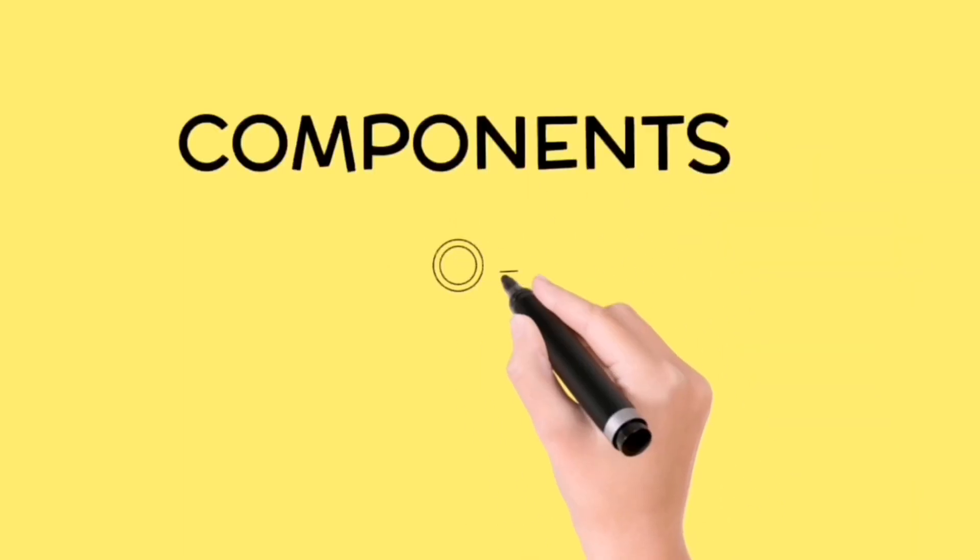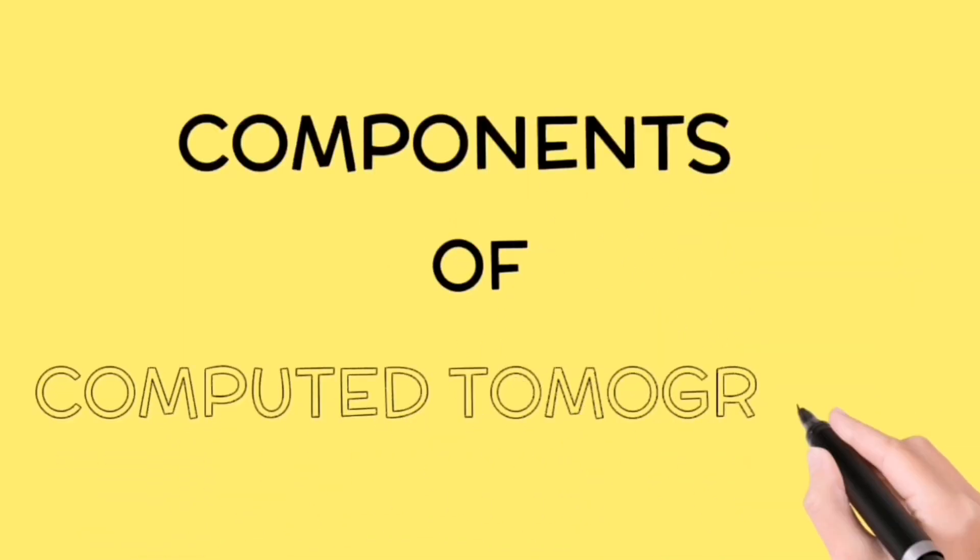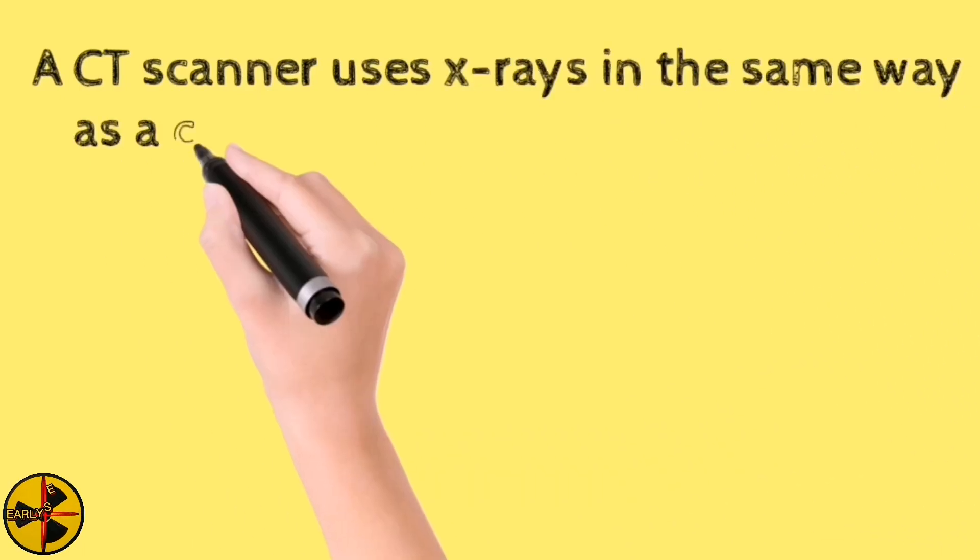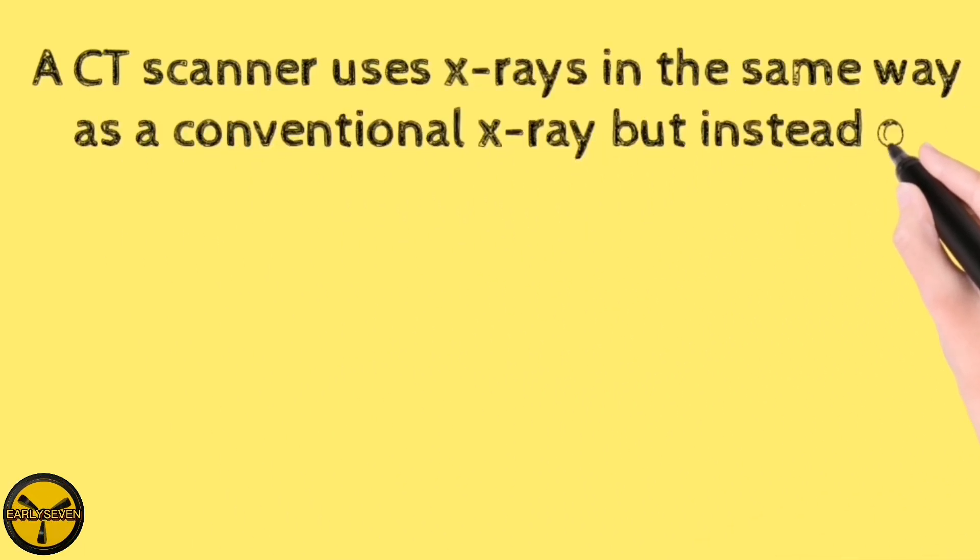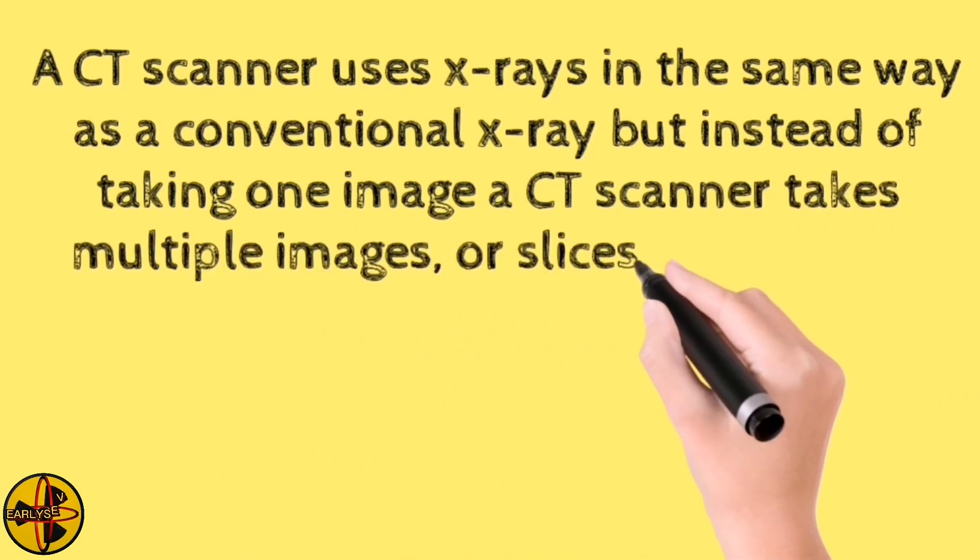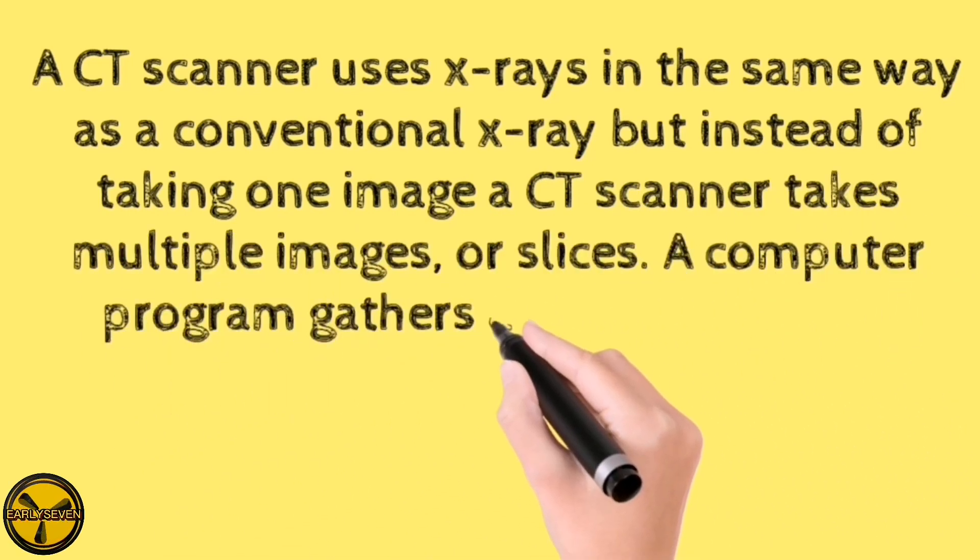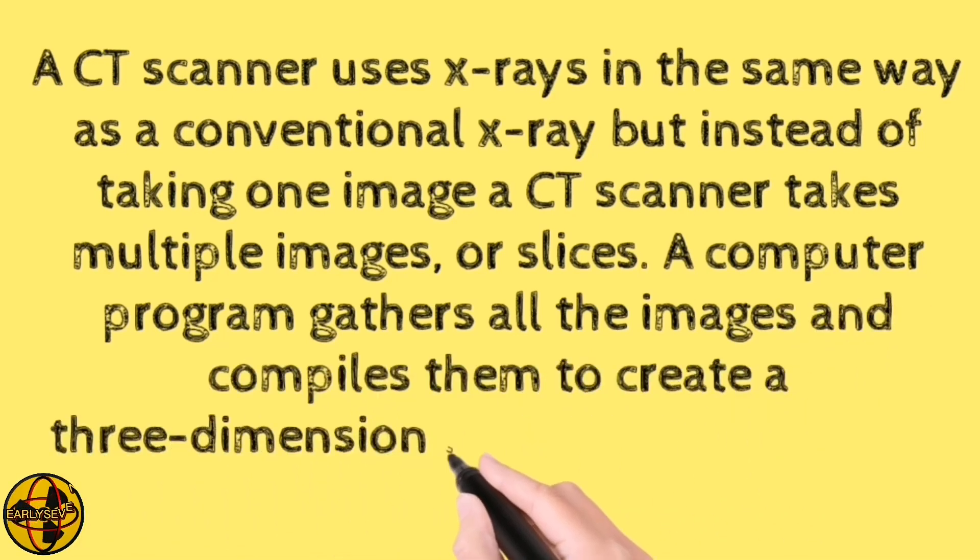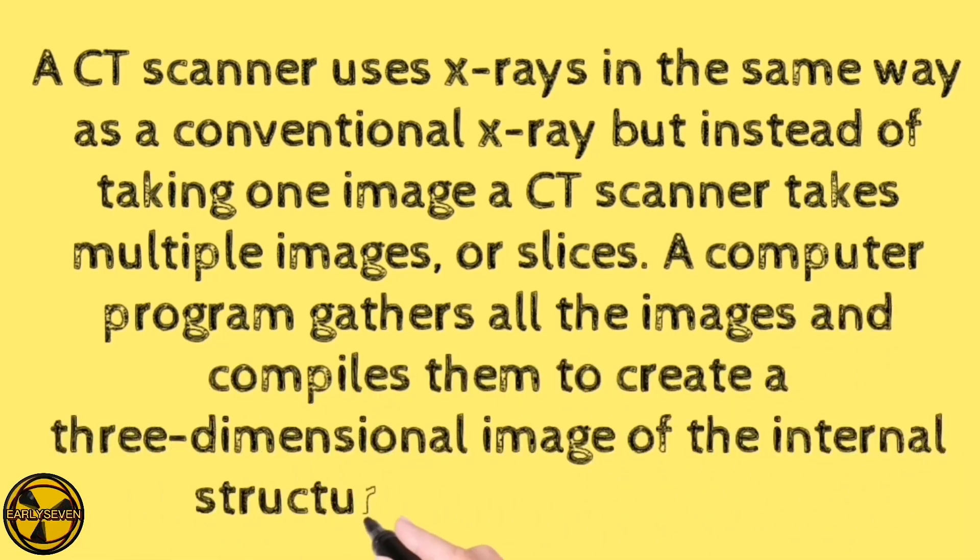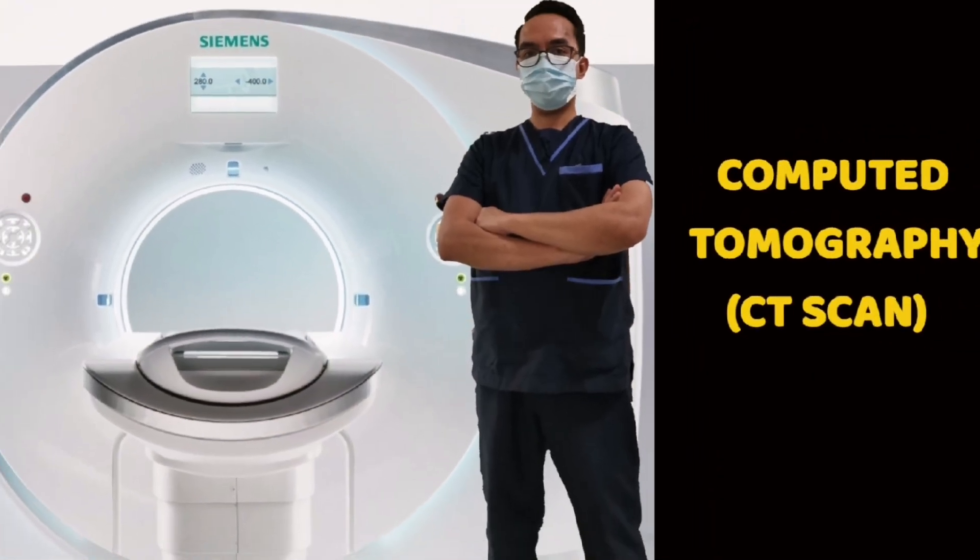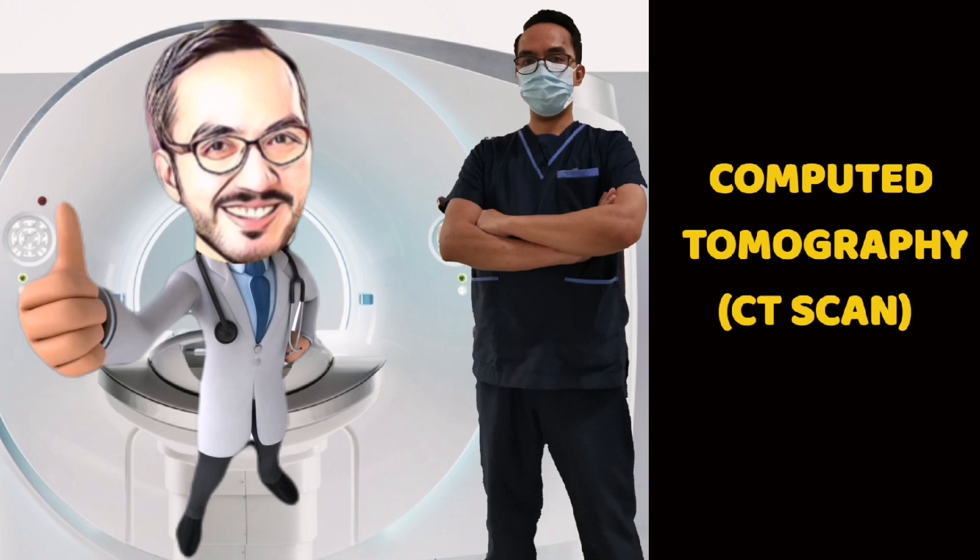What are the components of a CT scanner or computed tomography? A CT scanner uses x-rays in the same way as a conventional x-ray but instead of taking one image, a CT scanner takes multiple images or slices. A computer program gathers all the images and compiles them to create a three-dimensional image of the internal structures being examined. Advances have improved the sensitivity and usefulness of CT scanners since they were developed.